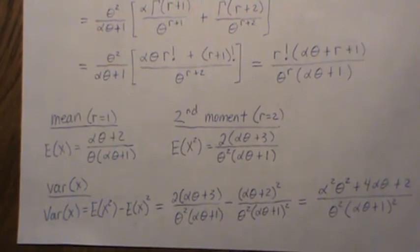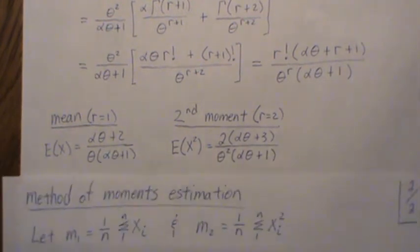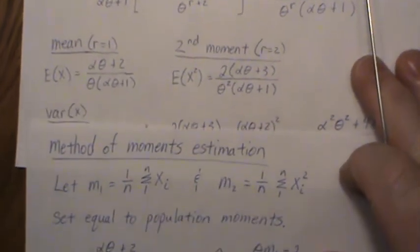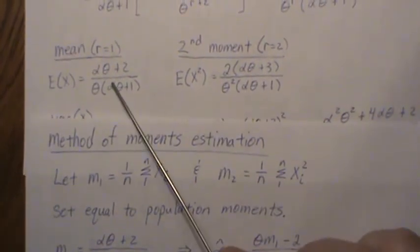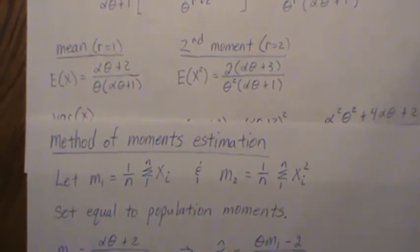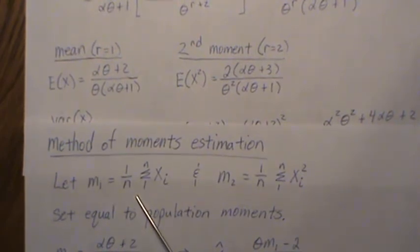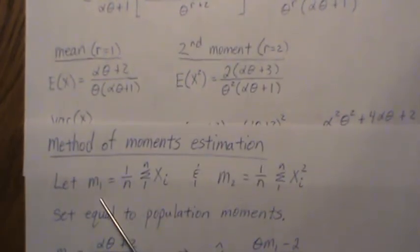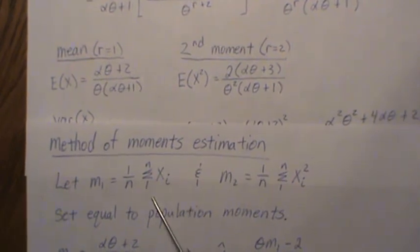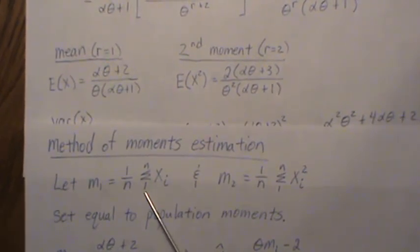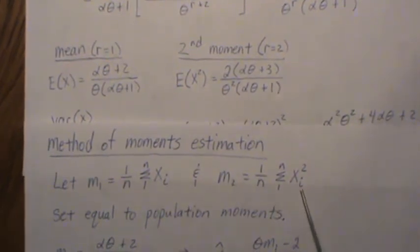Now to find the method of moments estimators for this distribution, we take the first and second moments of this distribution and set them equal to the sample first and second moments. We're going to let m1 be the sum of the xi divided by n.